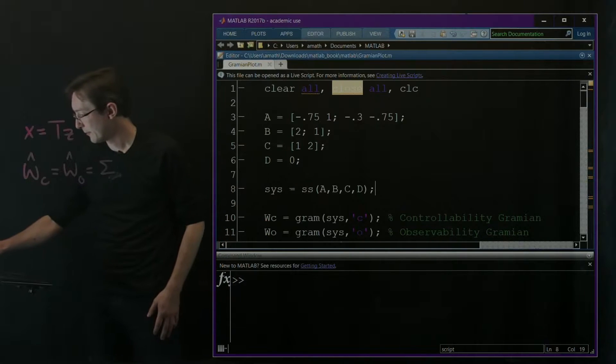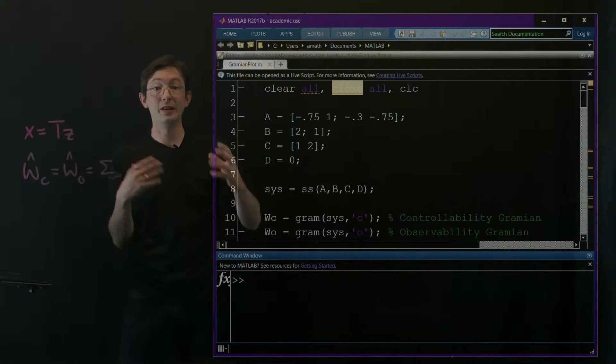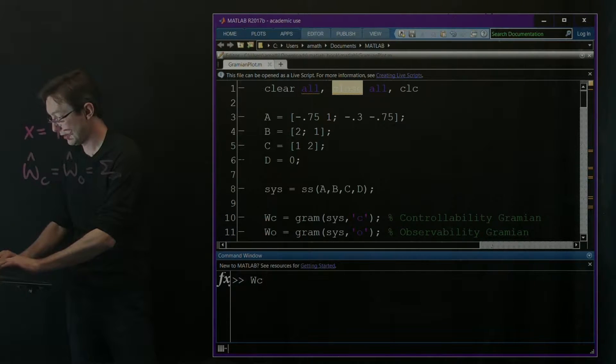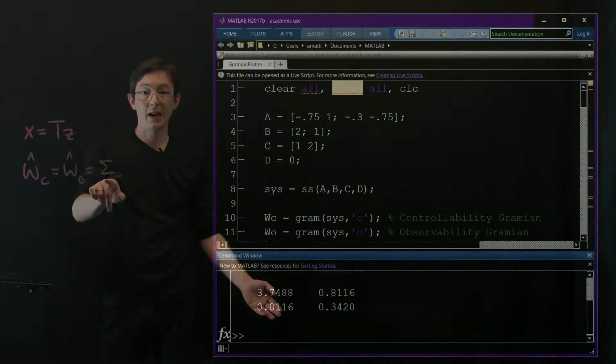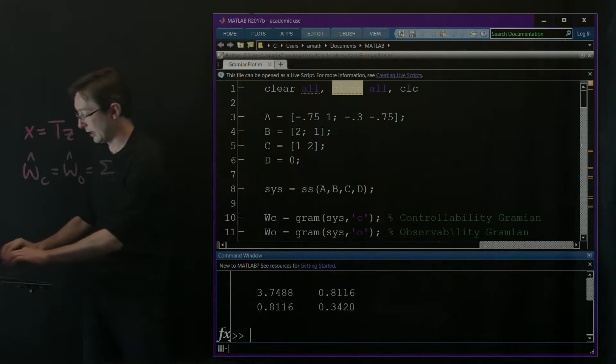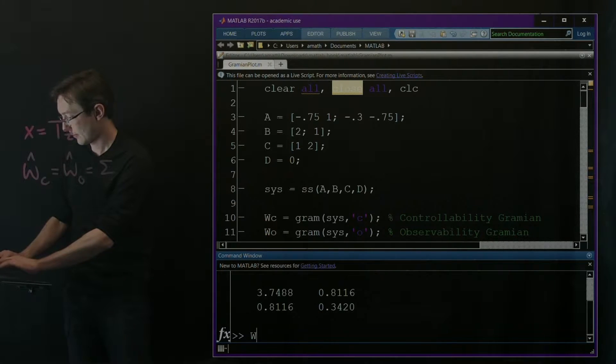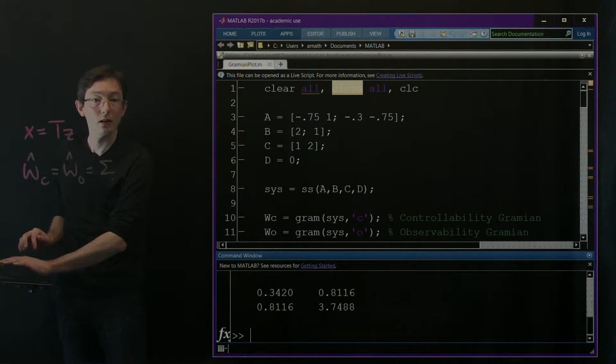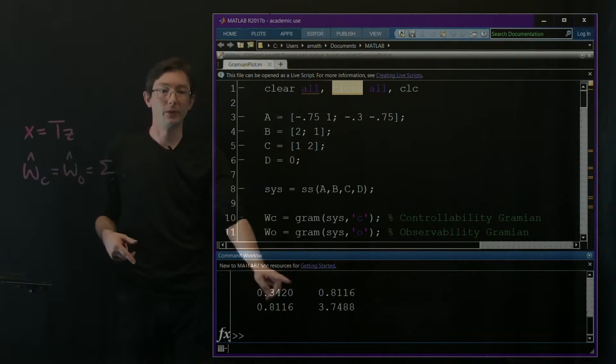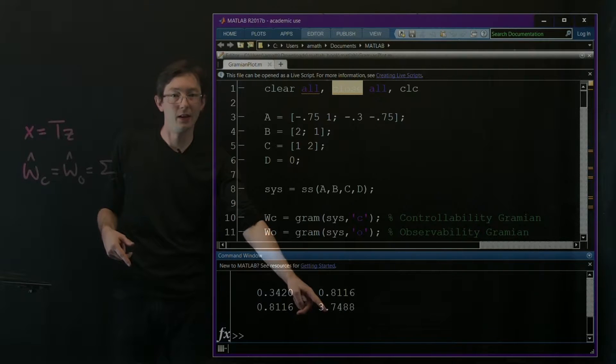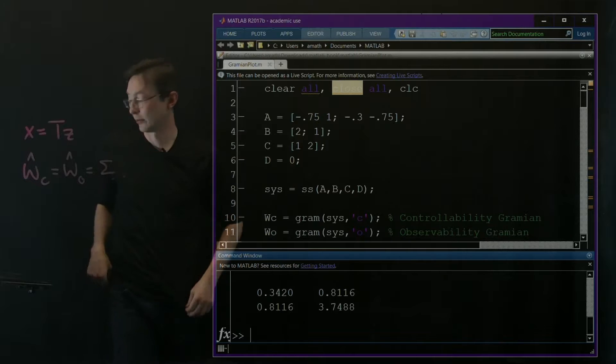It's running, and now let's just verify that our controllability and observability Gramians are not equal. So WC is this matrix, not diagonal. It's not a diagonal matrix, first of all. And then remember what it looks like. And then WO is not equal to that. In fact, it's almost opposite, right? Like this direction is more observable, and this direction was more controllable. So these are those two ellipsoids.